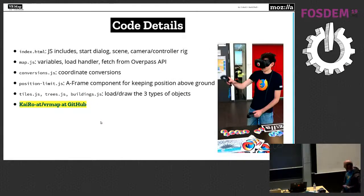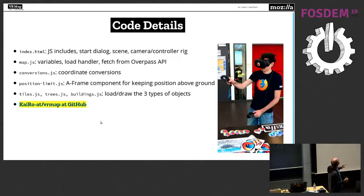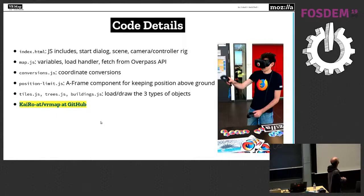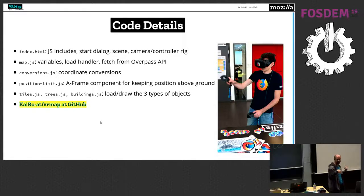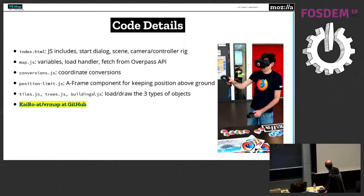The code itself is structured pretty simply. The index.html has the JavaScript includes and the scene setup and the intro dialog. Then there's map.js that handles the overall stuff like loading everything. Conversions is the most boring but most complex thing because it handles all the coordinate conversions. Position limit is an A-Frame component — it's pretty nice to see how a basic A-Frame component looks. In the first version, you could fly through the floor, so I wrote a component that prohibits that. And tiles.js, trees.js, and buildings.js are for drawing those three types of objects. It's on GitHub at cairo-at slash vr-map.